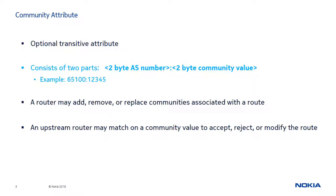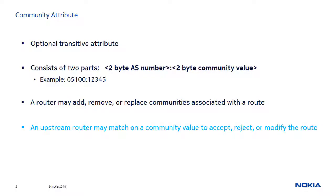A Community Attribute consists of two parts. The first part is the AS number, and the second part is any value within the 2-byte range that is assigned by the network operator to uniquely identify a given characteristic or property. A router may add, remove, or replace the communities associated with the route. Then, an upstream router may match on a community value to accept, reject, or modify the route.